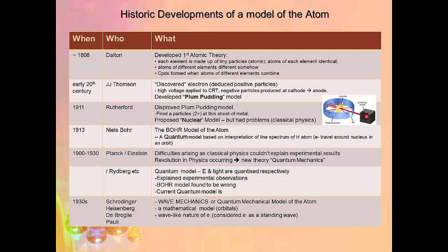Schrödinger, Heisenberg, de Broglie, and Pauli all contributed to developing the wave mechanics or quantum mechanical model of the atom, which we use today. It's a mathematical model which uses orbitals — regions of space where you have a probability of finding an electron — and electrons are said to have a wave-like nature rather than acting as particles.